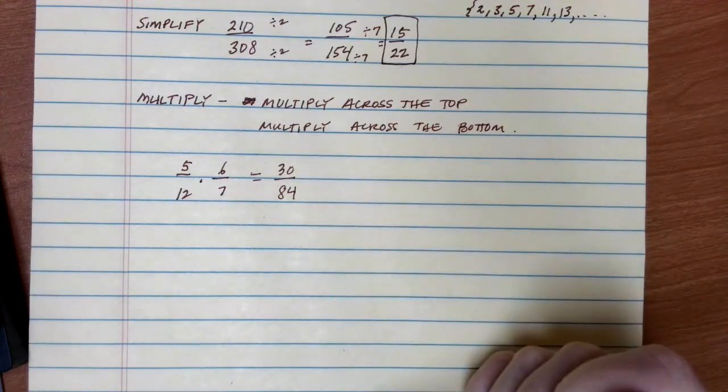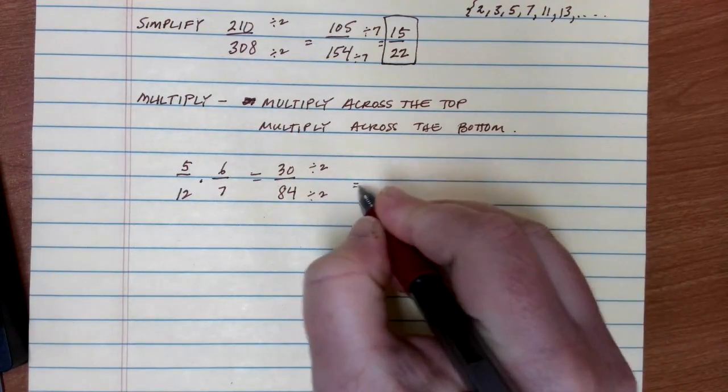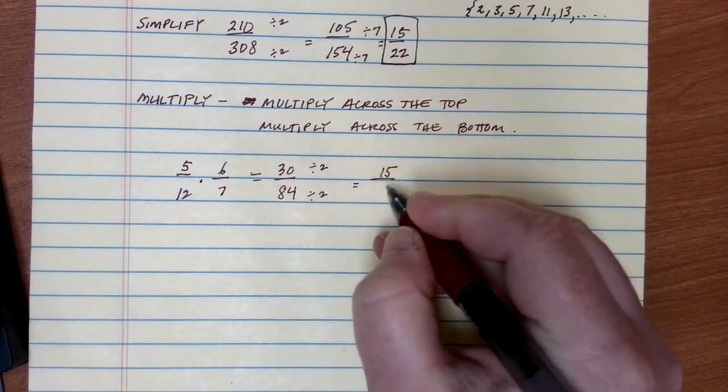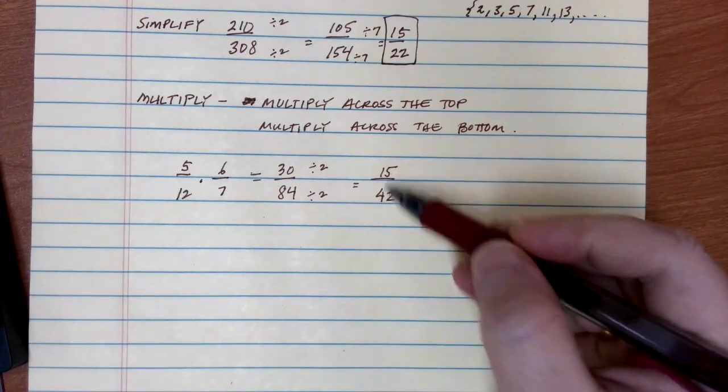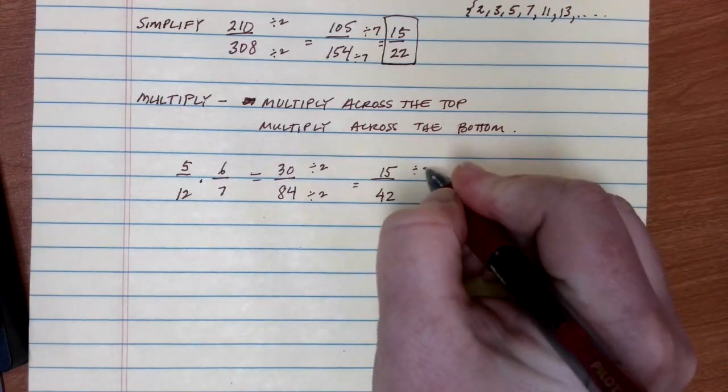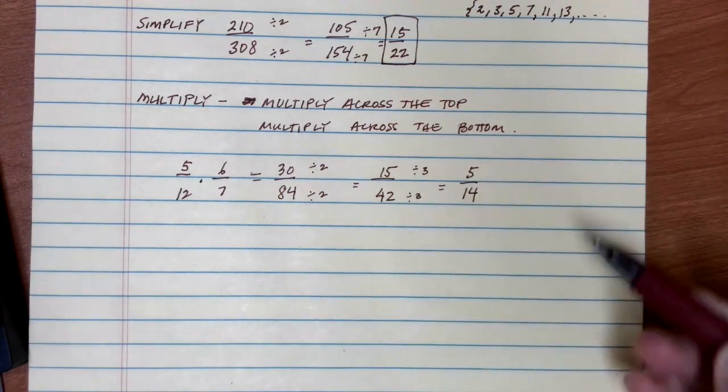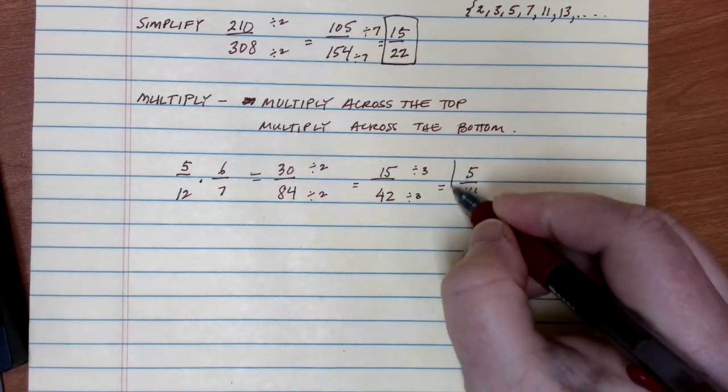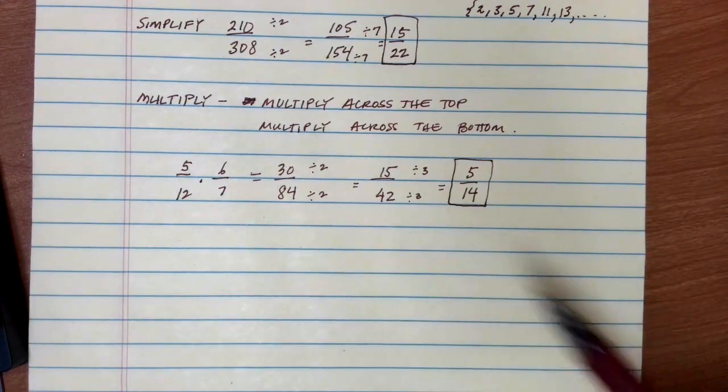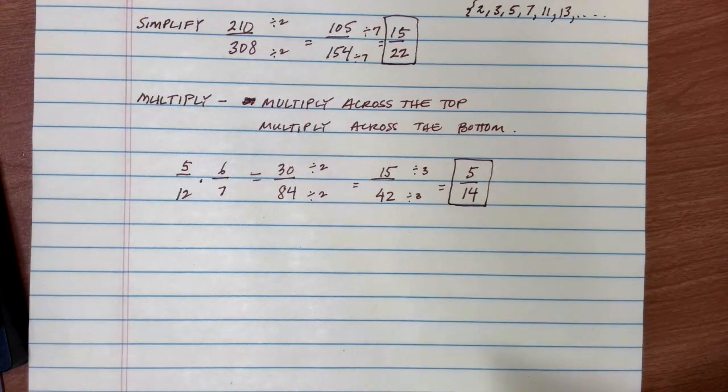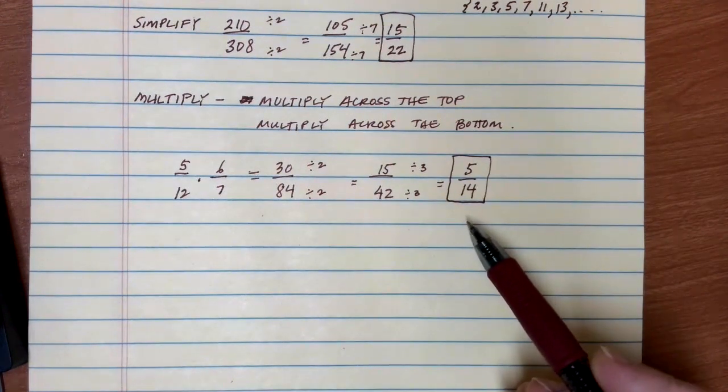Suppose that I have 5 over 12 and I want to multiply it by 6 over 7. All I need to do is multiply the numbers across the top. 5 times 6 gives me 30. Multiply across the bottom, 12 times 7 gives me 84. Before you finish your solution, you should check if you can reduce your answers. I have both are even numbers, so I can divide both the top and bottom by 2. That gives me 15 over 42. 3 does happen to go into both of these. Divide the top by 3, I get 5. Divide the bottom by 3, I get 14. And now I'm as simplified as I can get.